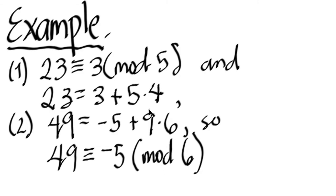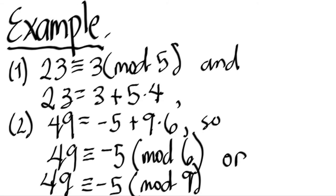It can be mod 9. If 49 minus minus 5 is going to give us 54, that's a multiple of 9. 49 minus minus 5 is also 54, which is also a multiple of 6. So either will do. We can say 49 is congruent to minus 5 mod 9.